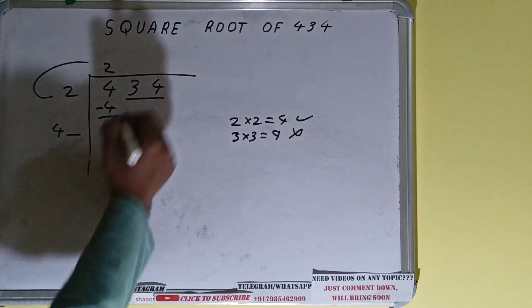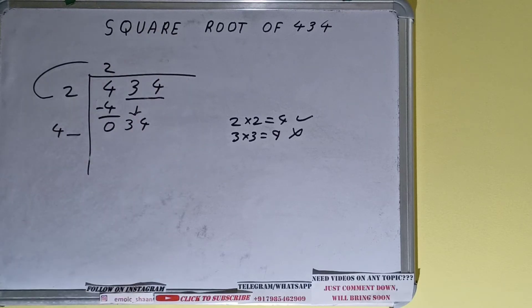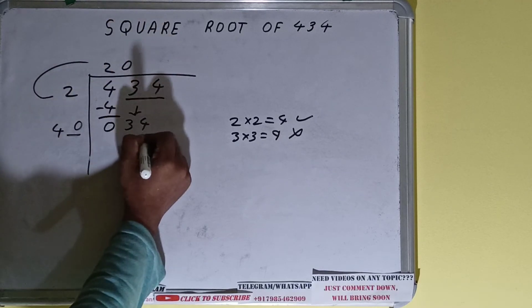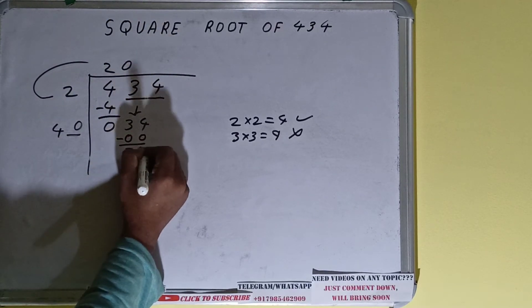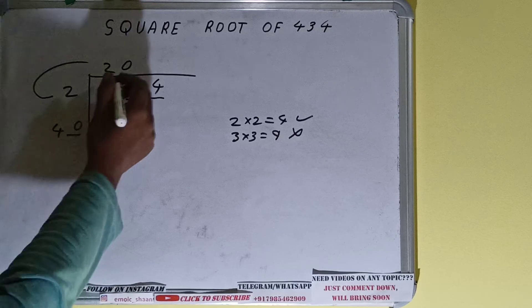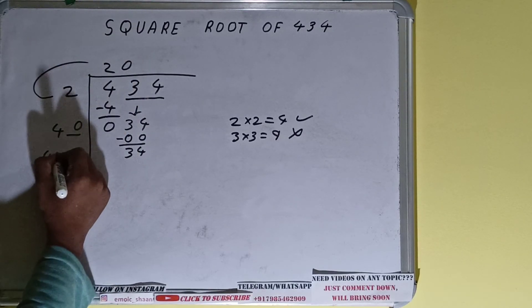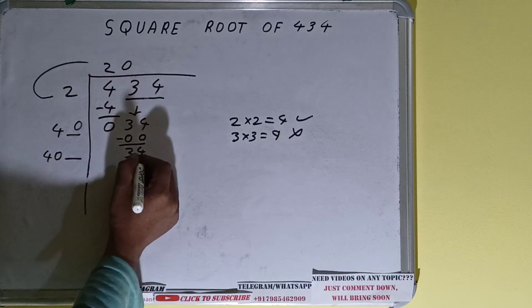Bring the next pair down and it will become 34. Now whatever number we write here, we write here also. 0 will work: 0 here and 0 here, again 34 will be left. Now 40 × 0 we did, so add both: 40 + 0 will be again 40, and give one digit extra. This number we need to make it big.